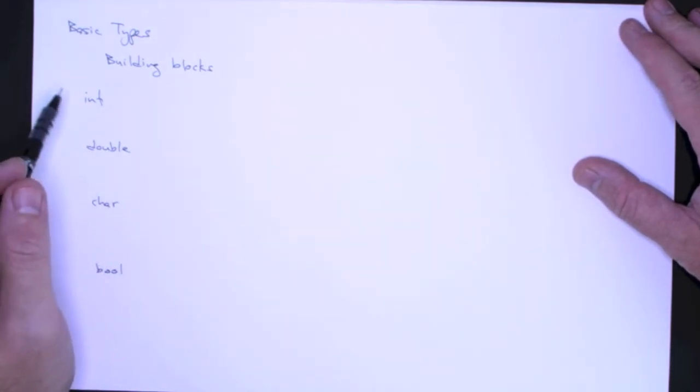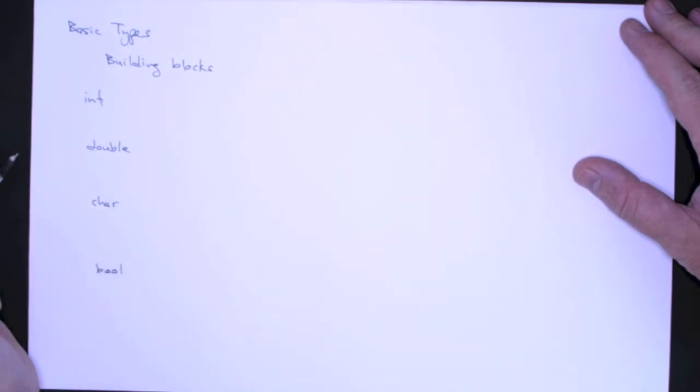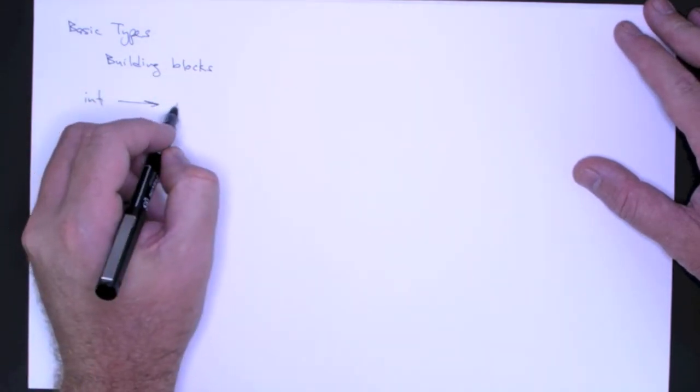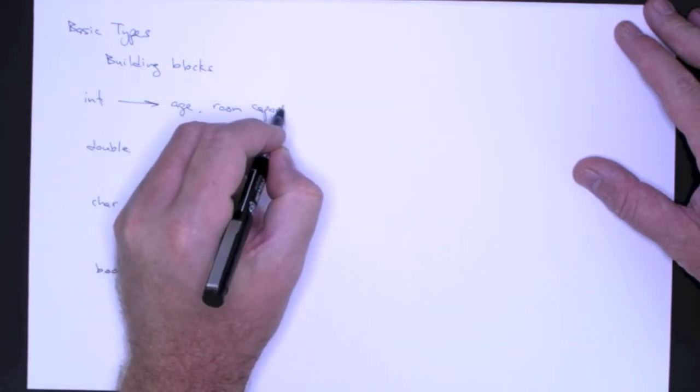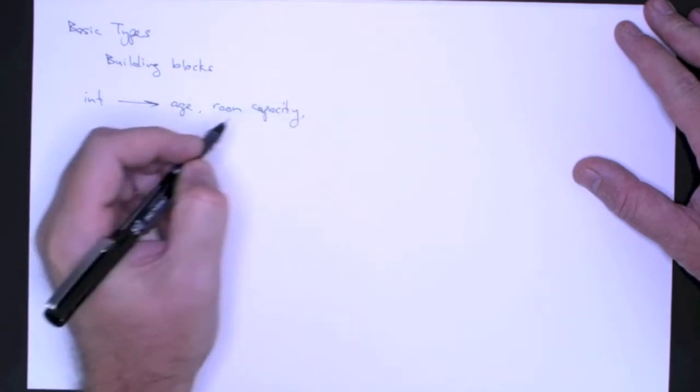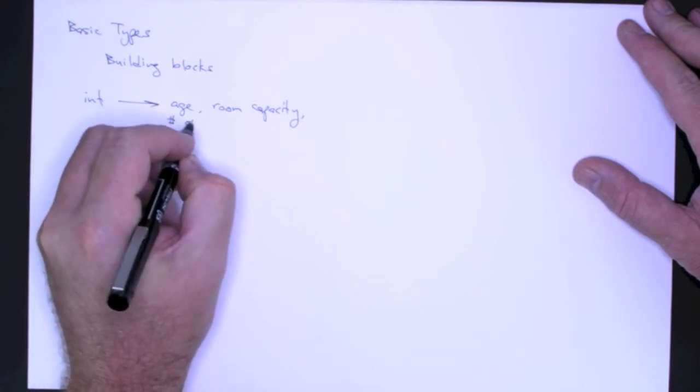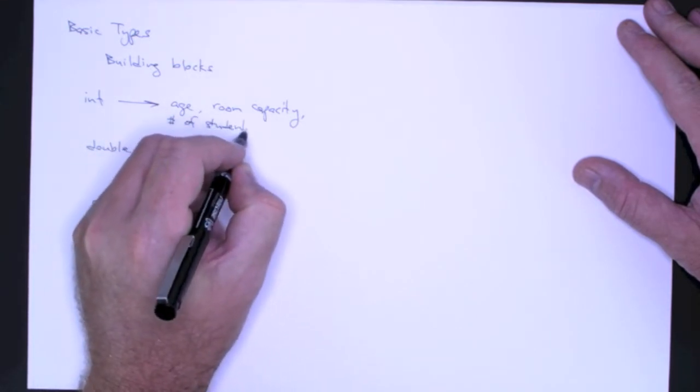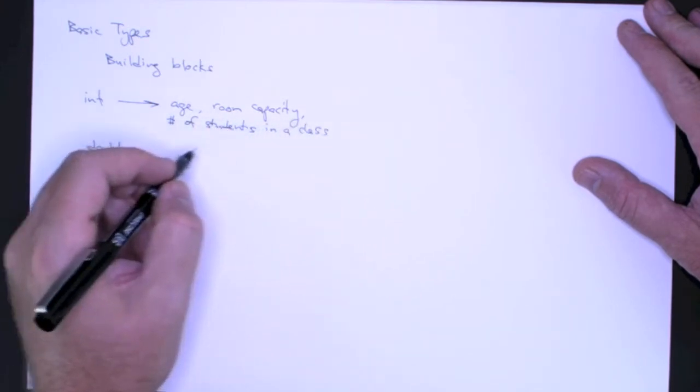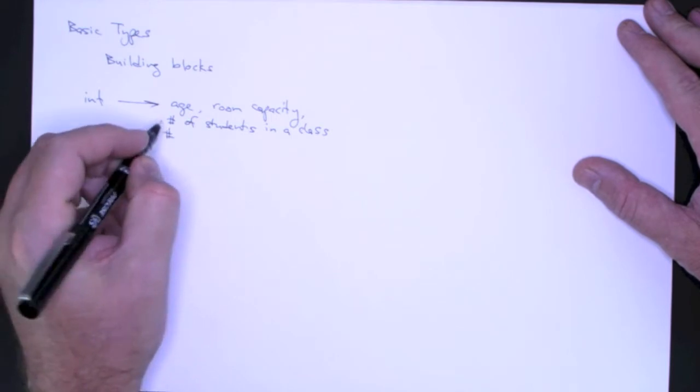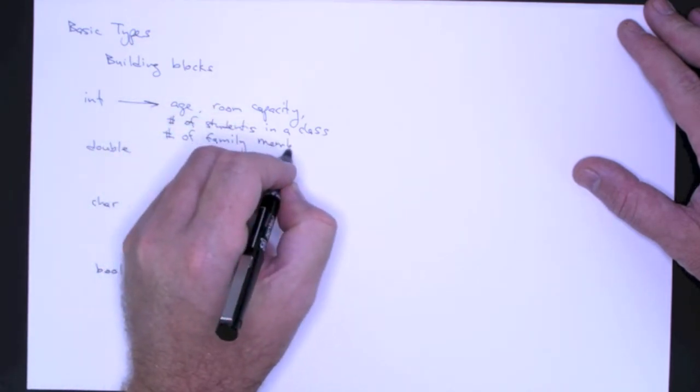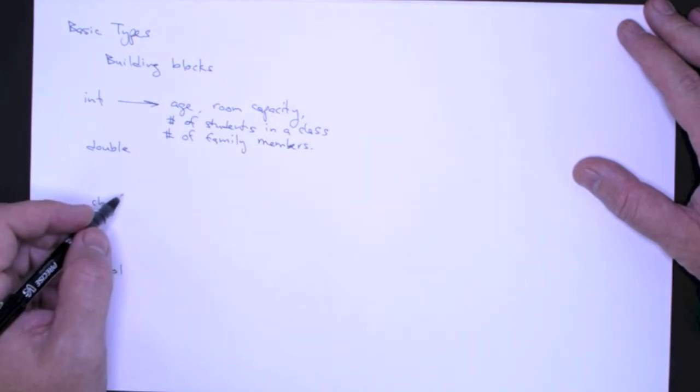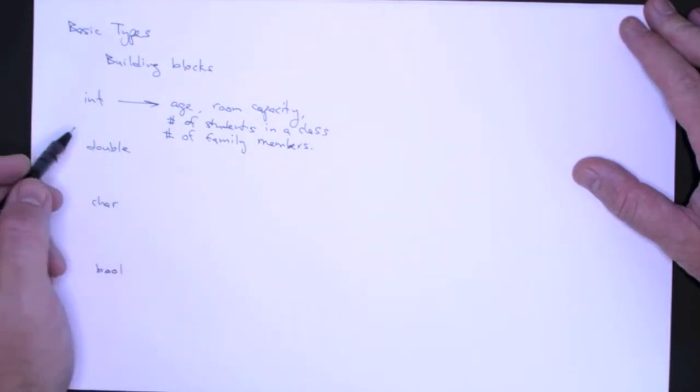And it's always important to pick the appropriate type for the piece of information that we're storing. So what kinds of things would we use an integer for? It could be a person's age, it could be the room capacity for a classroom if we're doing some sort of a course scheduling system, it could be the number of students in a class, the number of family members. So any kind of whole quantity. How many people are coming over for dinner? Any kind of whole quantity we would use an integer.